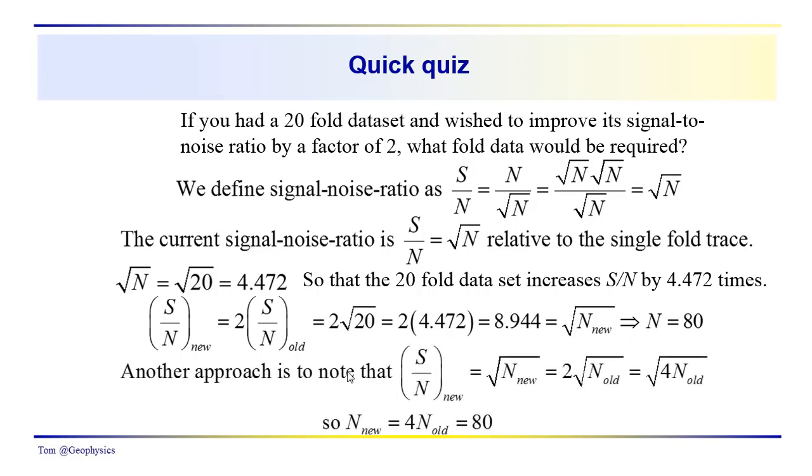So another approach would be just to write this down as the new signal-to-noise ratio would be equal to the square root of the new number of traces that you need. That would be equal to 2 times the old number of traces. We take that 2 inside the radical here. We get 4 times the old. So the number of new traces again is 4 times the old number of traces, would be 80.